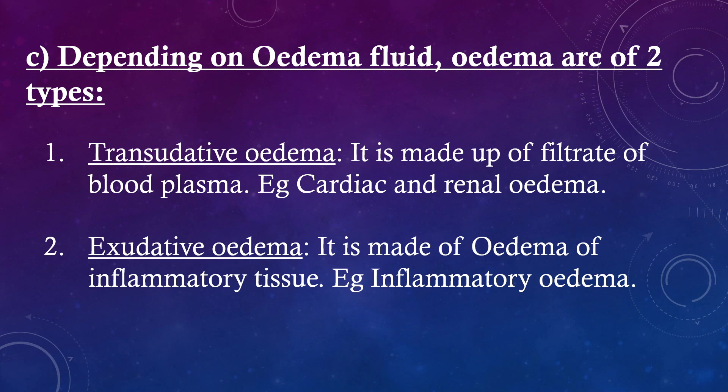Depending on the edema fluid, edema is of two types. Transudative edema — it is made up of a filtrate of blood plasma; examples include cardiac and renal edema. Exudative edema — it is made up of fluid from inflammatory tissue; example is inflammatory edema.